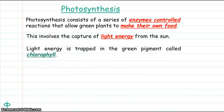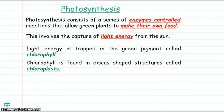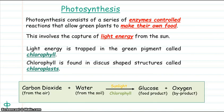Light energy is trapped in the green pigment called chlorophyll. Chlorophyll is found in disc-shaped structures called chloroplasts. The basic equation for photosynthesis is carbon dioxide from the air plus water from the soil, in the presence of sunlight and chlorophyll, makes glucose and oxygen gas.